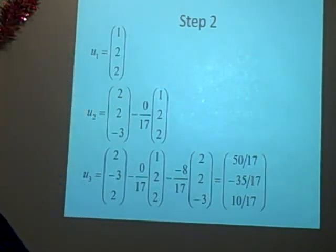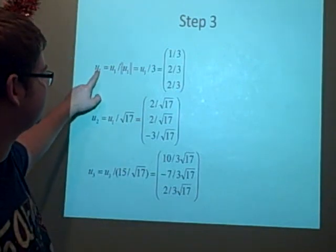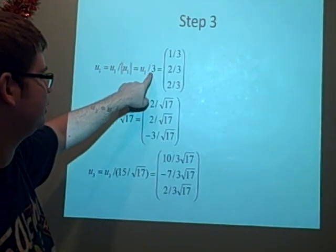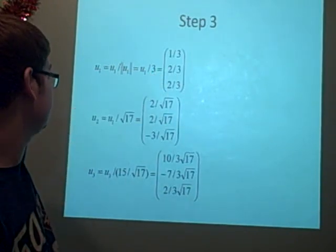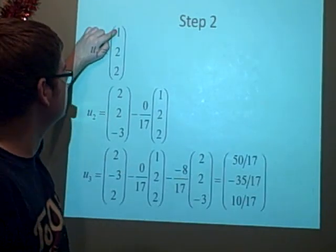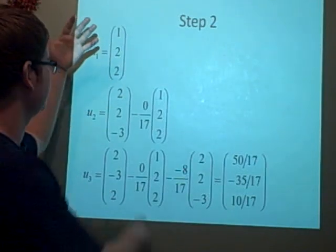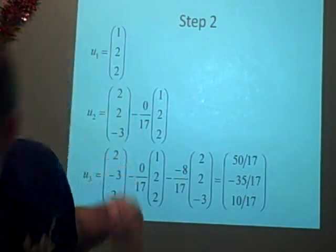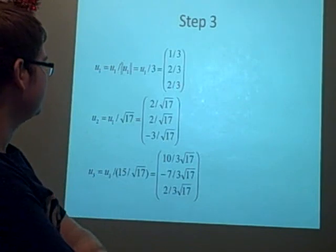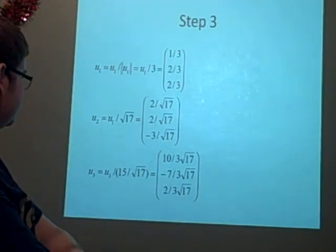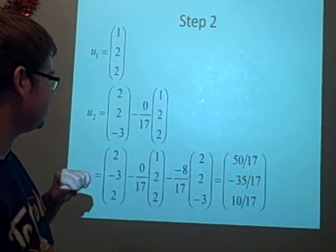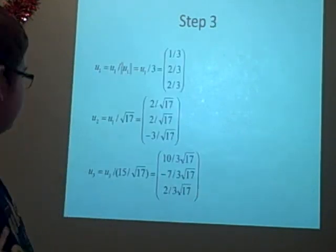Next thing we want to do is make them orthonormal. So we've got u_1 equals u_1 over the norm of u_1. We've got u_1, in this case the norm is 3. We can see we get 1^2 is 1 plus 2^2 is 4, so we've got 5, plus another 2^2 is 9, square root of 9 is 3. So that's why we divided by 3. Our next one, we end up dividing by √17 because we've got 4 plus 4 plus 9, which is 17 square rooted, so √17.